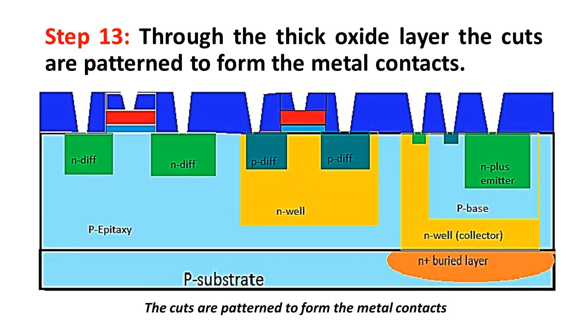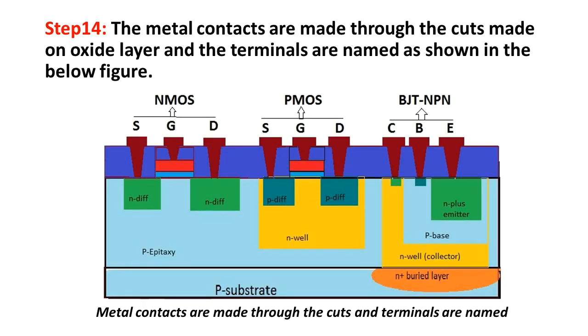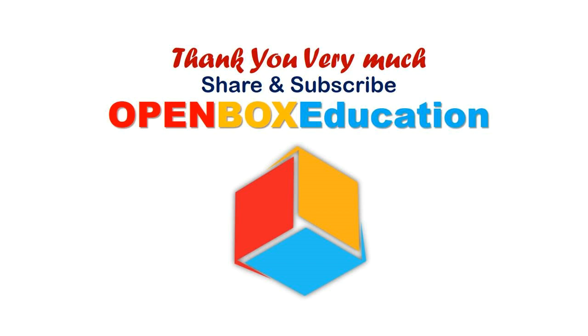Step 14: The metal contacts are made through the cuts made on the oxide layer and the terminals are named as shown in the below figure. Thank you very much. Please share and subscribe to OpenBox Education.